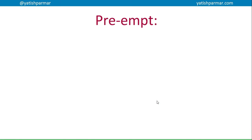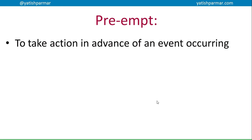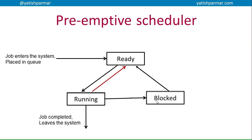The diagram I've described is a preemptive scheduler. 'Preempt' means to take action in advance of an event occurring - predicting what's going to happen and acting before it does. In a preemptive scheduler, a job enters the system, goes into the running state and works, but then the operating system realizes it's going to block the system - it's taking too much time - so it moves it out of the running state into a ready state before a problem occurs.